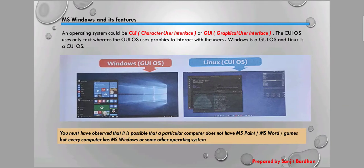An operating system could be CUI, which means Character User Interface, or GUI, which means Graphical User Interface. The CUI OS uses only text, whereas the GUI OS uses graphics to interact with the user. In CUI, the user interacts with the computer using predefined commands through a command line input interface — you type commands to give instructions to the computer.